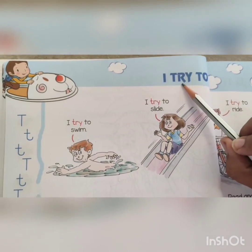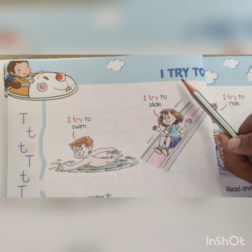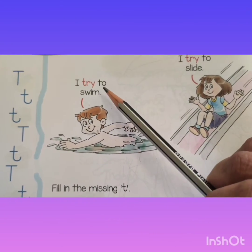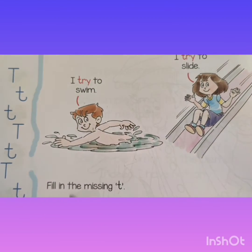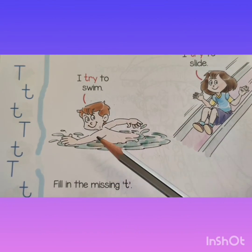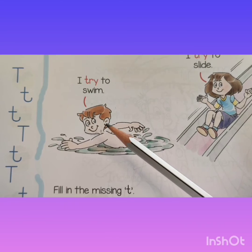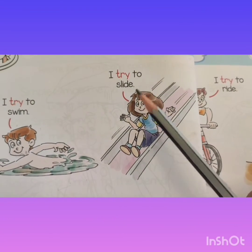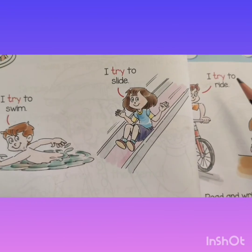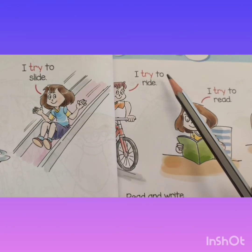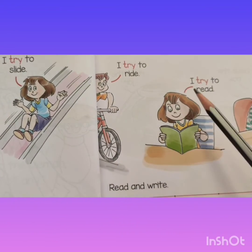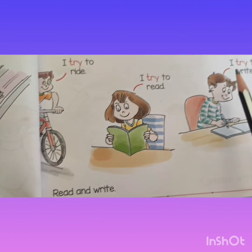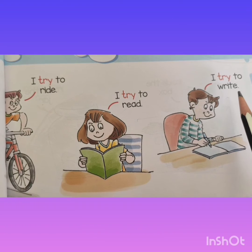I try to — the word 'trying' means 'koshish karna.' I try to swim. Who is trying to swim? Yes, the boy is trying to swim. I try to slide. I try to ride. I try to read. I try to write.